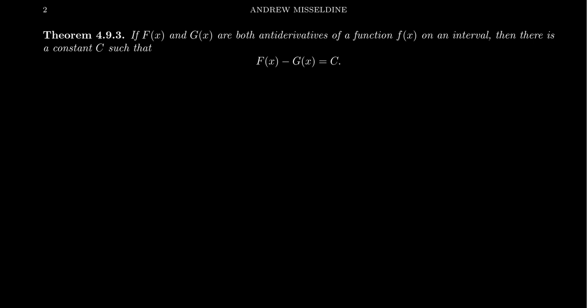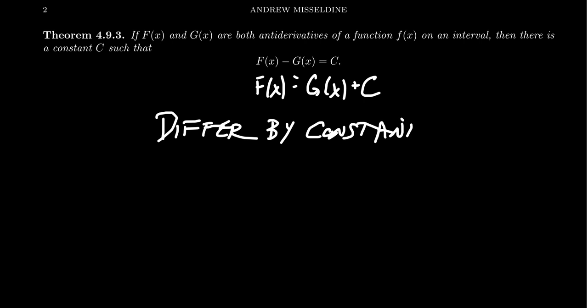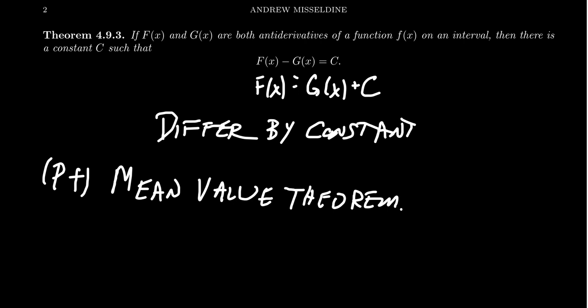If f of x and g of x are both anti-derivatives of the same function, little f of x on some interval, then there's a constant such that f of x minus g of x equals C. Or as we often write this, f of x equals g of x plus C. That is, these functions only differ by a constant. And the proof of this fact right here actually follows from the mean value theorem, which we saw earlier this semester. The language is a little bit different here, because we didn't use the language of anti-derivatives yet. But we did prove, using the mean value theorem earlier, that if two functions have the same derivative, they differ only by a constant. That's exactly the scenario we're in right now.